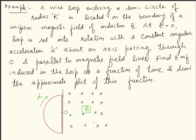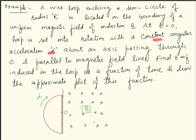Hello dear students. This EMF problem is about electromagnetic induction. A wire loop enclosing a semicircle of radius R is located on the boundary of a uniform magnetic field of induction B. At t equal to 0, the loop is set into rotation with a constant angular acceleration alpha about an axis passing through O and parallel to the magnetic field lines. Find the EMF induced in the loop as a function of time and draw the approximate plot of this function.